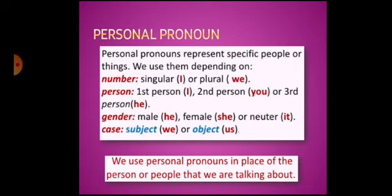There are three persons. First person, second person, and third person. The first person is the person speaking. The second person is the person spoken to. And the third person is the person spoken about. For example, if I speak to you about Vijay, I am the first person, you are the second person, and Vijay is the third person. We use personal pronouns in place of the person or people that we are talking about.